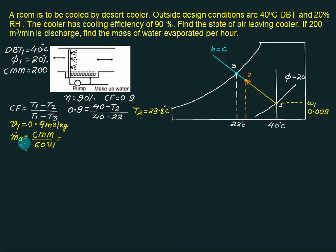So the mass flow rate of air is CMM divided by 60. CMM is cubic meters per minute, so divide by 60 to get cubic meters per second. And divide by V1 which is 0.9. So we have mass flow rate equal to 3.7 kg per second.